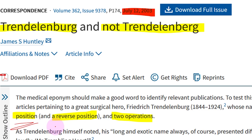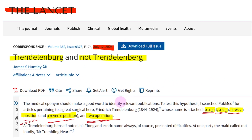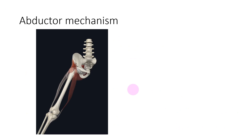His name is associated with a gait, a sign, a test, a position called Trendelenburg position and a reverse Trendelenburg position, and also two operations. This is one of the fancy eponyms that is asked in many examinations.